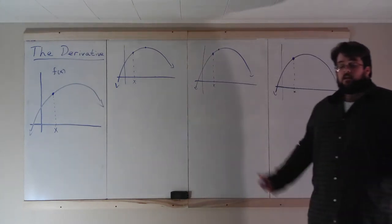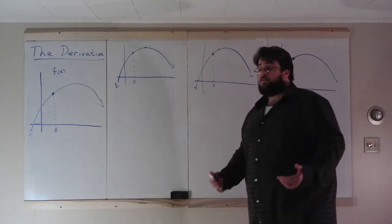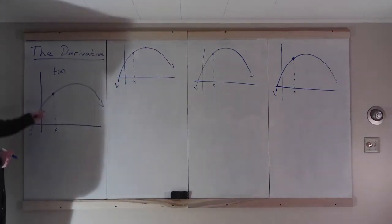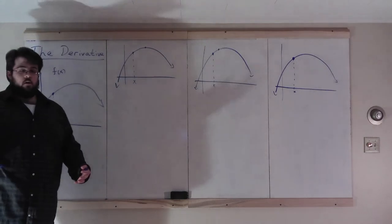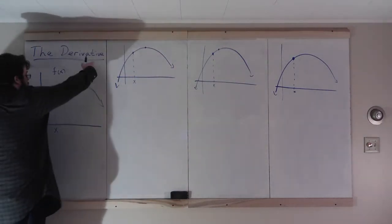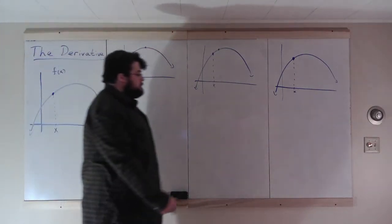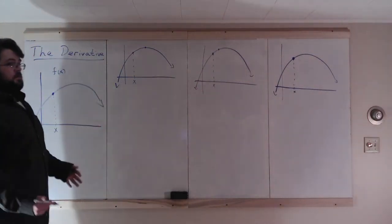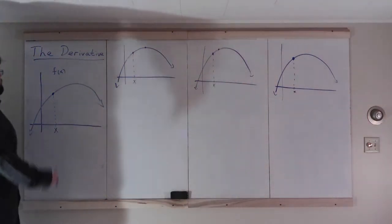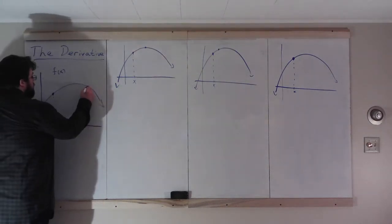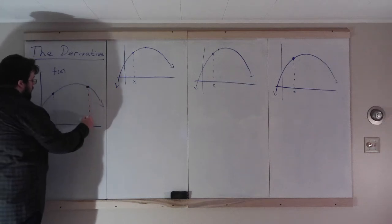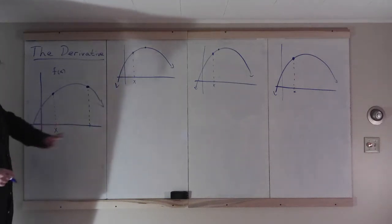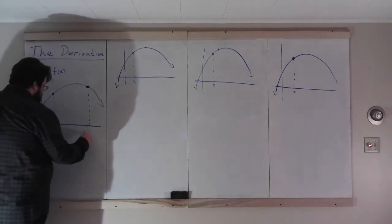We're going to see that we can use a limit to define the quantity we want. To get there, let's first look at a graph. Here we have a function, and here we have a point x marked off on the function. Our goal is going to be to figure out the slope of a tangent line at x. After looking at a couple of graphs, we'll build up to the illustration we want. We're going to first observe that we can easily find the slope of another line. This other x value I'm going to call x plus h.